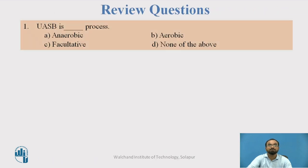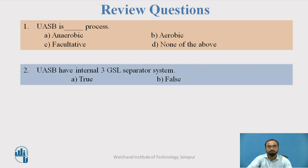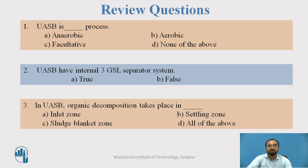Let us have a few review questions. UASB is which type of process — anaerobic, aerobic, facultative, or none of the above? UASB has an internal three-phase GSL separator system — true or false? In UASB, organic decomposition takes place in the inlet zone, settling zone, sludge blanket zone, or all of the above?